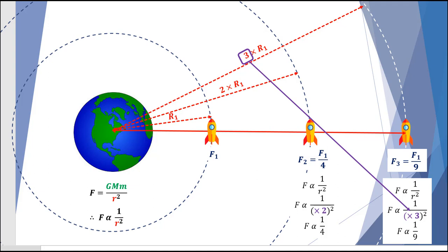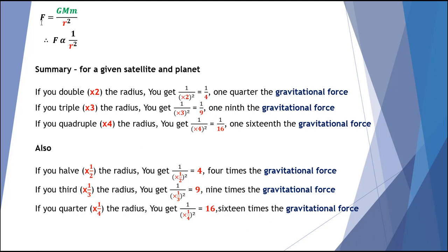As a quick summary: for a given satellite and planet, when you double the radius you get one quarter of the gravitational force; when you triple the radius, one ninth; when you quadruple the radius, one sixteenth. Working backwards — if you halve the radius, 1 over (1/2)² gives four, so you get four times the gravitational force. If you reduce the radius to a third, you get nine times the force. If you quarter the radius, you get 16 times the gravitational force. The inverse nature means moving objects further apart gives a weaker force, and moving them closer gives a stronger force.